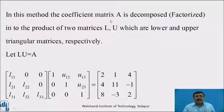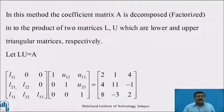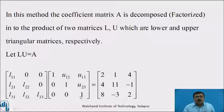In this method the coefficient matrix A is decomposed into lower and upper triangular matrices. Let LU = A, where L is the lower triangular matrix [[L11, 0, 0], [L21, L22, 0], [L31, L32, L33]] and U is the upper triangular matrix [[1, U12, U13], [0, 1, U23], [0, 0, 1]], equal to the matrix A = [[2, 1, 4], [4, 11, −1], [8, −3, 2]].